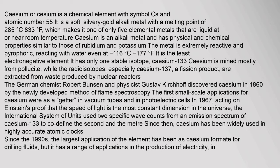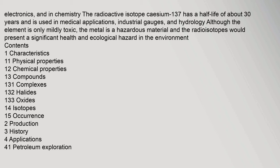Caesium, or cesium, is a chemical element. The radioactive isotope caesium-137 has a half-life of about 30 years and is used in medical applications, industrial gauges, and hydrology. Although the element is only mildly toxic, the metal is a hazardous material and the radioisotopes would present a significant health and ecological hazard in the environment.